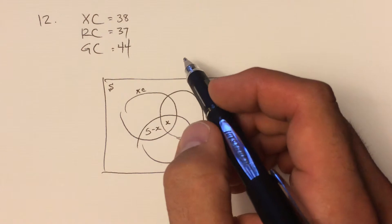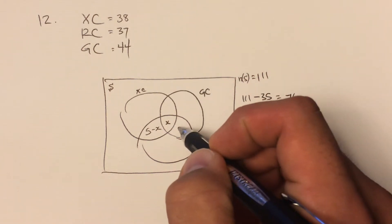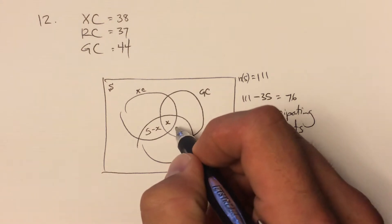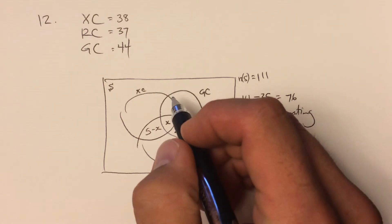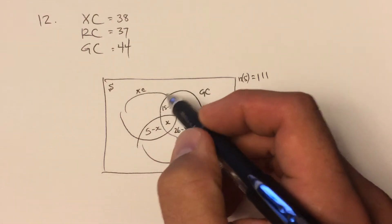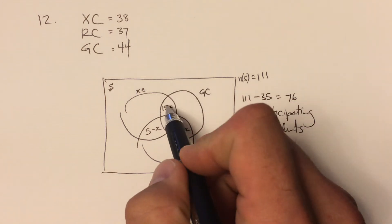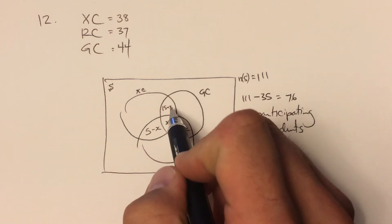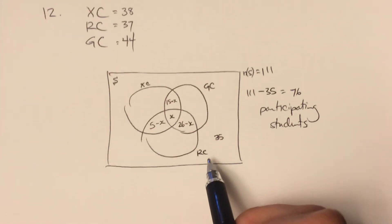The next piece is there are 26 students in robotics and guitar. That is here, this spot. So 26 minus X. And the last location up here, 15 students, 15 minus X. 15 students participate in this area right here. So 15 minus X are the students who participate in just cross-country and guitar, but not also in robotics. All right, so we have all of that information.